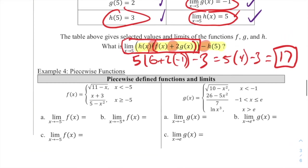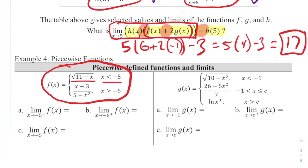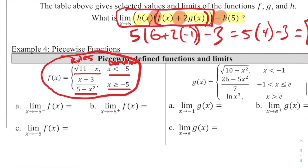Example 4 involves piecewise functions. The function f(x) equals √(11 − x) when x < −5, and (x + 3)/(5 − x²) when x ≥ −5. A piecewise function gives different rules over different domains. Sometimes the pieces connect to form a continuous function, and sometimes they don't — we won't know until we test actual values.